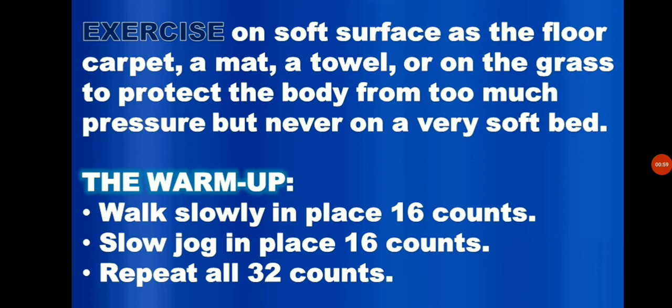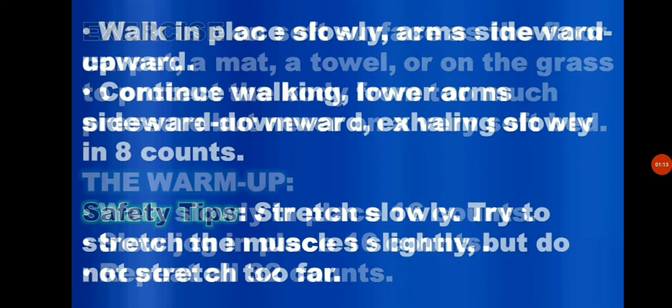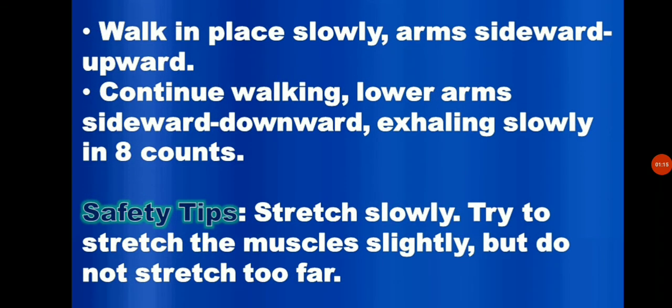In the warm-up, walk slowly in place for 16 counts. Slow jog in place for 16 counts. Repeat all for 32 counts. Walk in place slowly, arms sideward and upward slowly for 8 counts. Continue walking, lower arms sideward and downward, exhaling slowly for 8 counts.